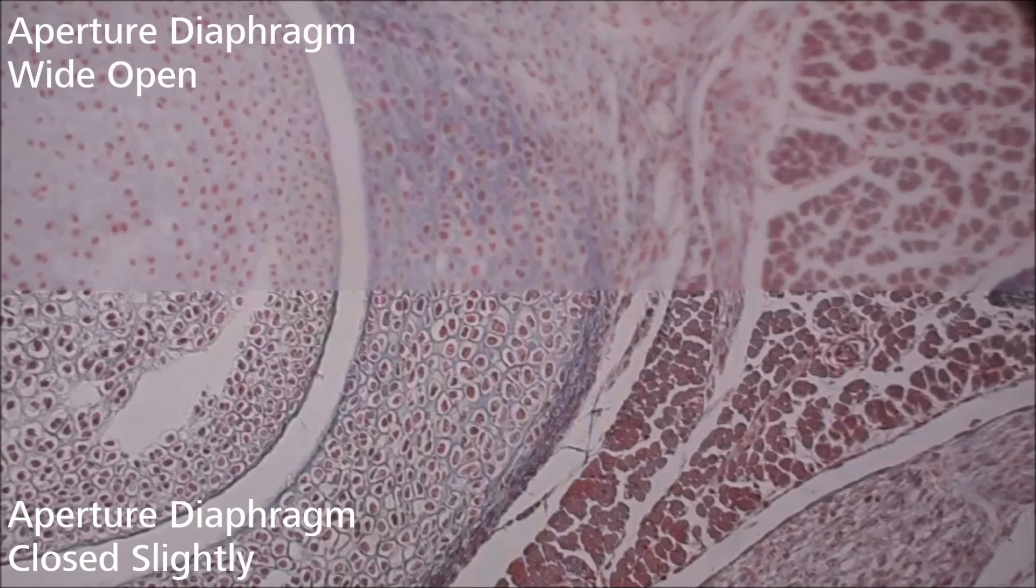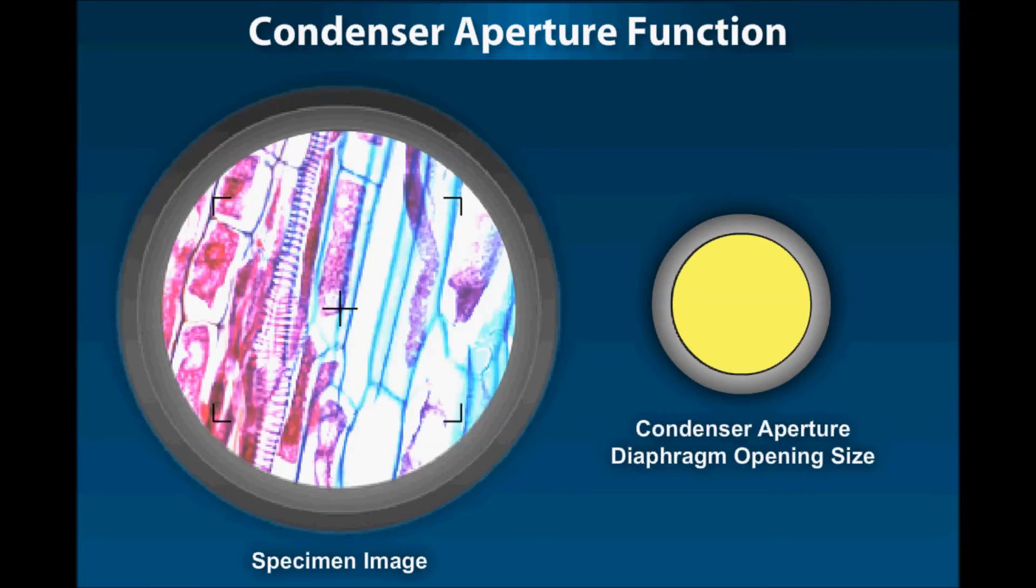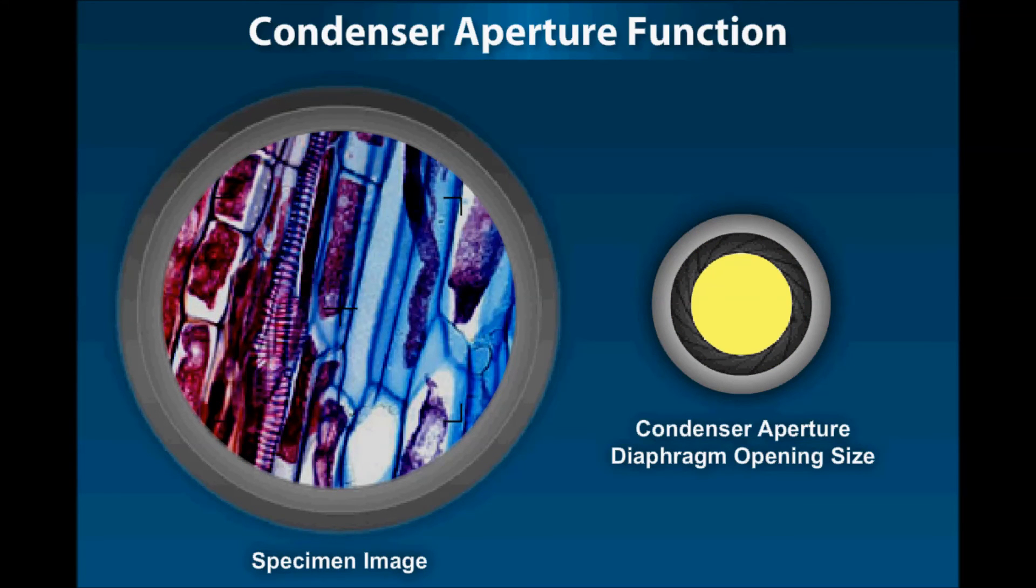Setting the aperture diaphragm opening too small will steal resolution from your image. Never use this diaphragm to control the brightness of your illumination. Use neutral density filters instead.